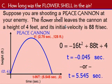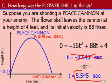So now to answer the question, I have now found my other t intercept, 5.545. Now if you notice, we got two answers. The negative 0.045 seconds refers to the point behind where the cannon was fired. So that answer does not make sense. So we just omit it. Now to answer the question, how long was the flower shell in the air? It was in the air 5.545 seconds.